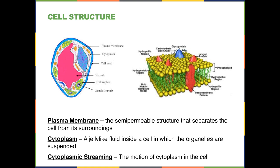When the cell needs to move things around internally, one thing it can do is cause the cytoplasm to stream or move. In the process of cytoplasmic streaming, if the cell has material in one location and needs to get it to the nucleus, it can stream that material around the outside of the cell to reach the nucleus. This is known as cytoplasmic streaming.